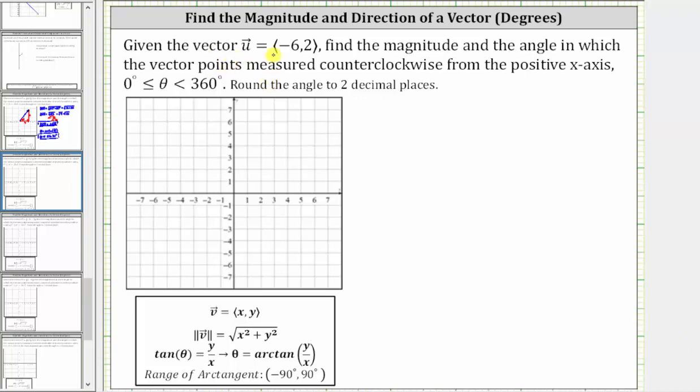Given vector u in component form, we're asked to find the magnitude and direction, where the direction is the angle in which the vector points measured counterclockwise from the positive x-axis. And we're told to give the angle theta in degrees.